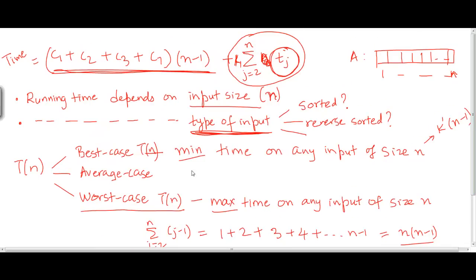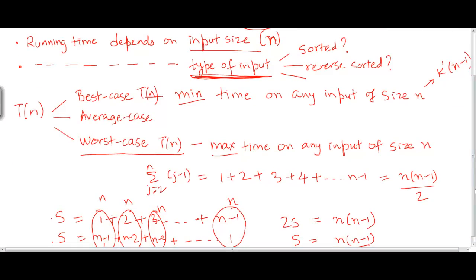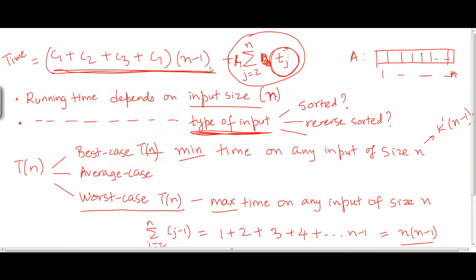Going back to the expression for running time, the worst case running time is going to be k1 multiplied by n(n-1)/2, plus some constant multiplied by n minus 1. So this is going to be some constant k' multiplied by (n-1) plus some other constant k1 multiplied by n(n-1)/2.